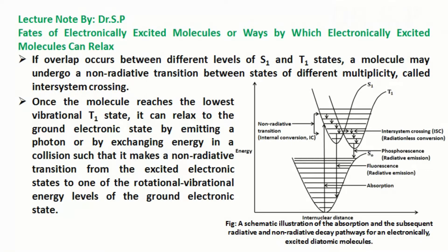If overlap occurs between different S1 and T1 states, a molecule may undergo a non-radiative transition between states of different multiplicity, called inter-system crossing.